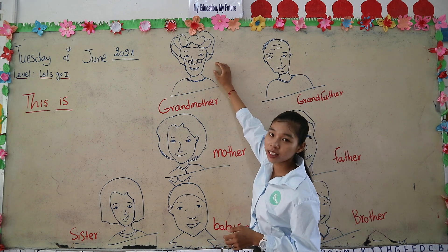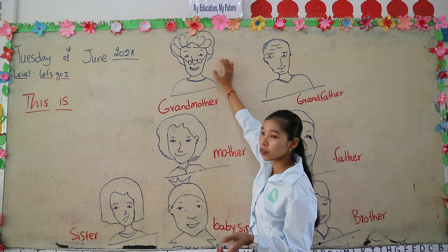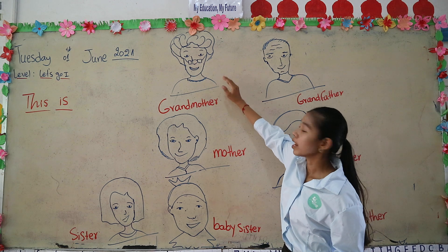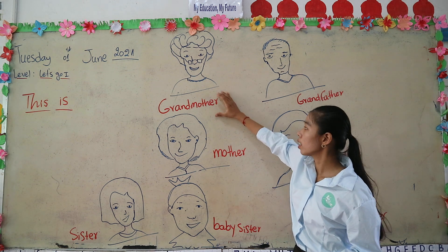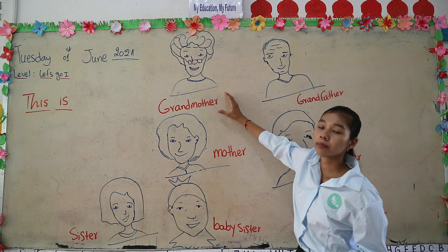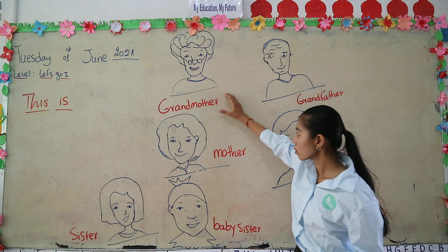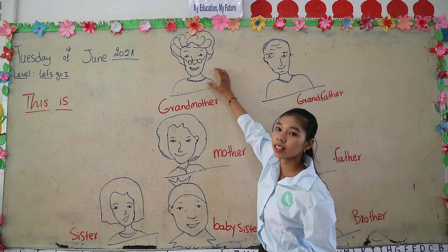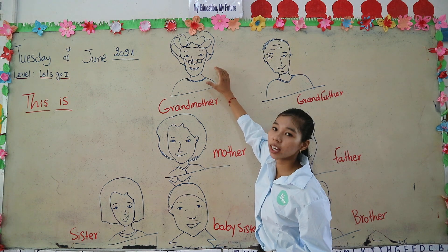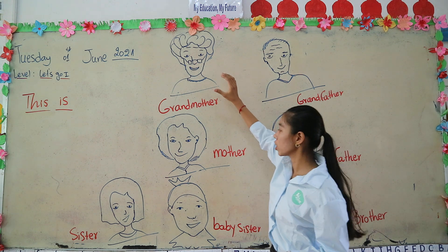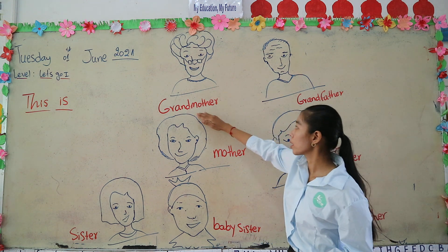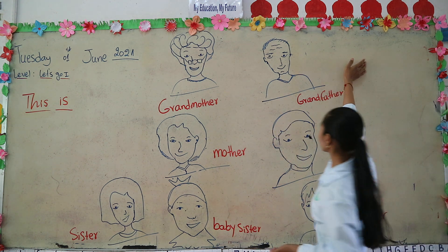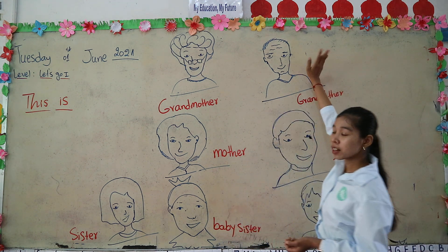Like other people in your family — this one we call grandmother. She is a girl, so we call her grandmother. She is an old person, older than your mother. Grandmother.